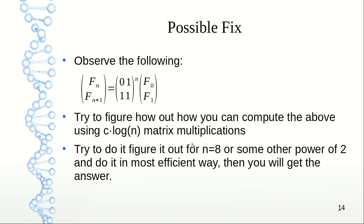What is a possible fix? Observe this matrix multiplication—we can calculate fn and fn plus 1 using this matrix multiplication in a clever way, so that within some constant c times log n number of matrix multiplications, you can calculate fn plus 1. Then you will have running time polynomial with respect to input size, as our input size is roughly log n. Try to do it for n equals 8 or some power of 2, and you will get why we can do it in log n number of steps and find fn plus 1 and fn efficiently.